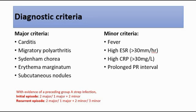Whereas for migratory polyarthritis, it usually affects larger joints — for example, the wrist, the knee, or ankle joints. Sydenham's chorea is characterized by involuntary, purposeless movements, followed by motor weakness and hypotonia.